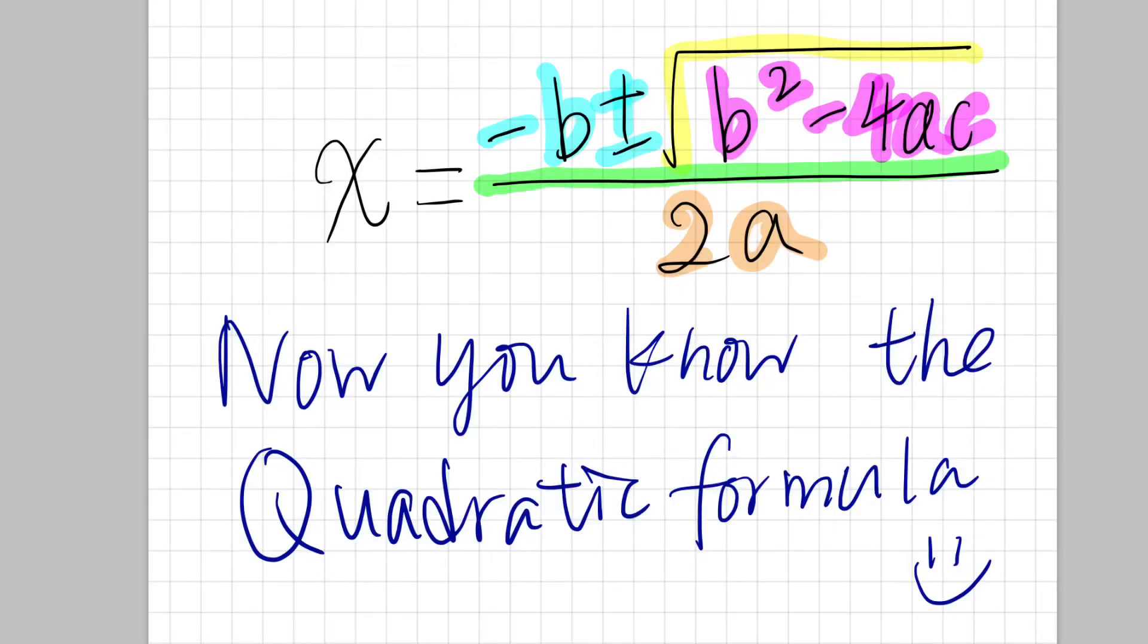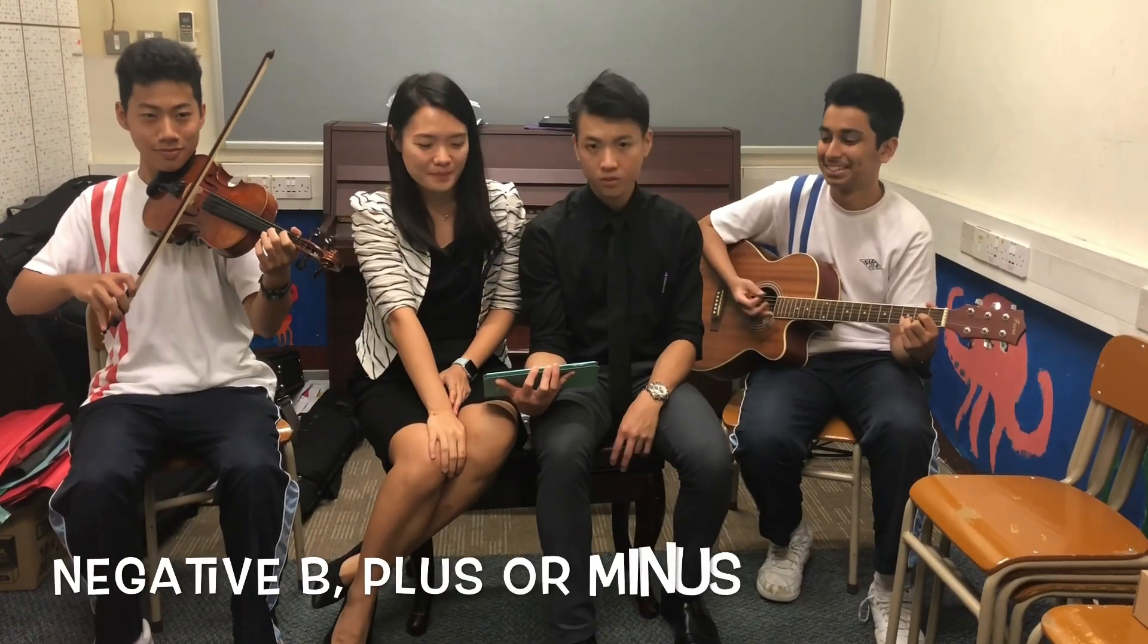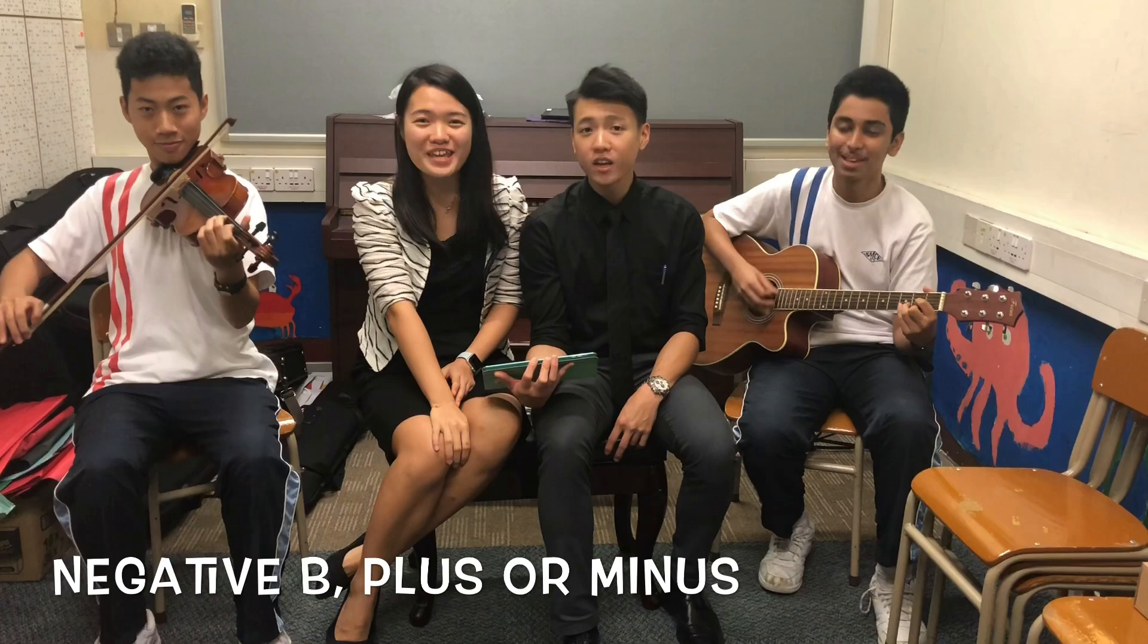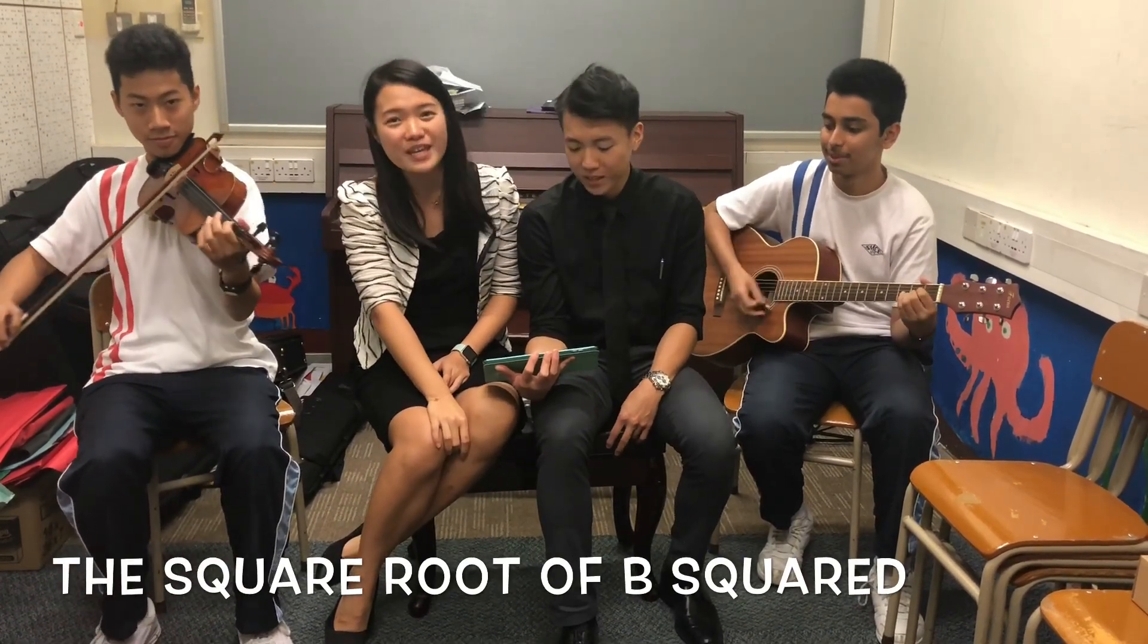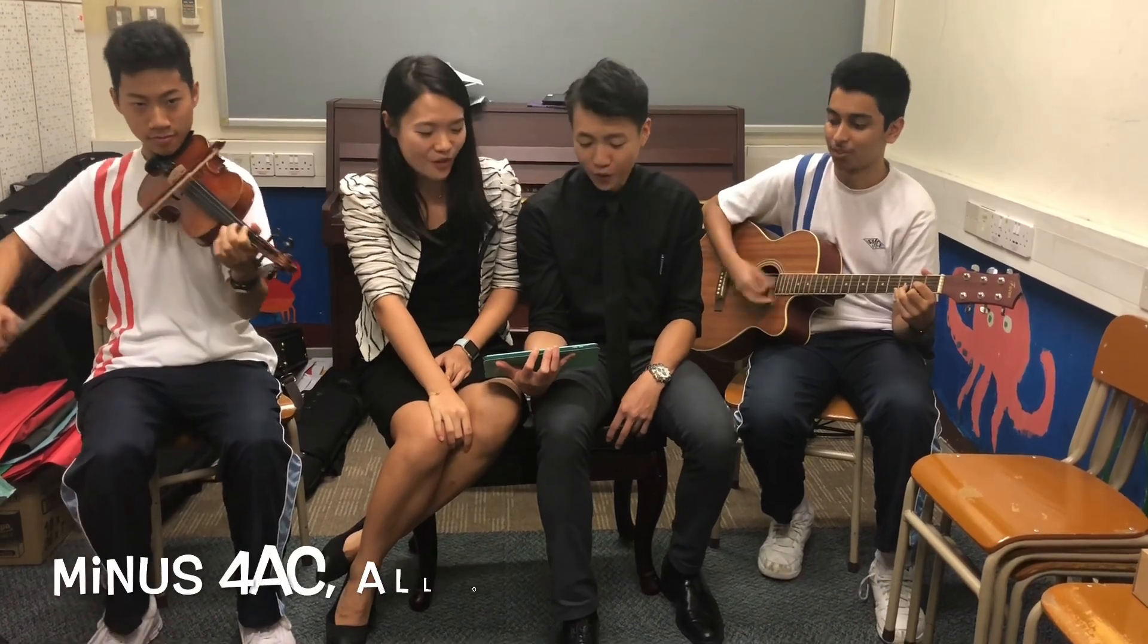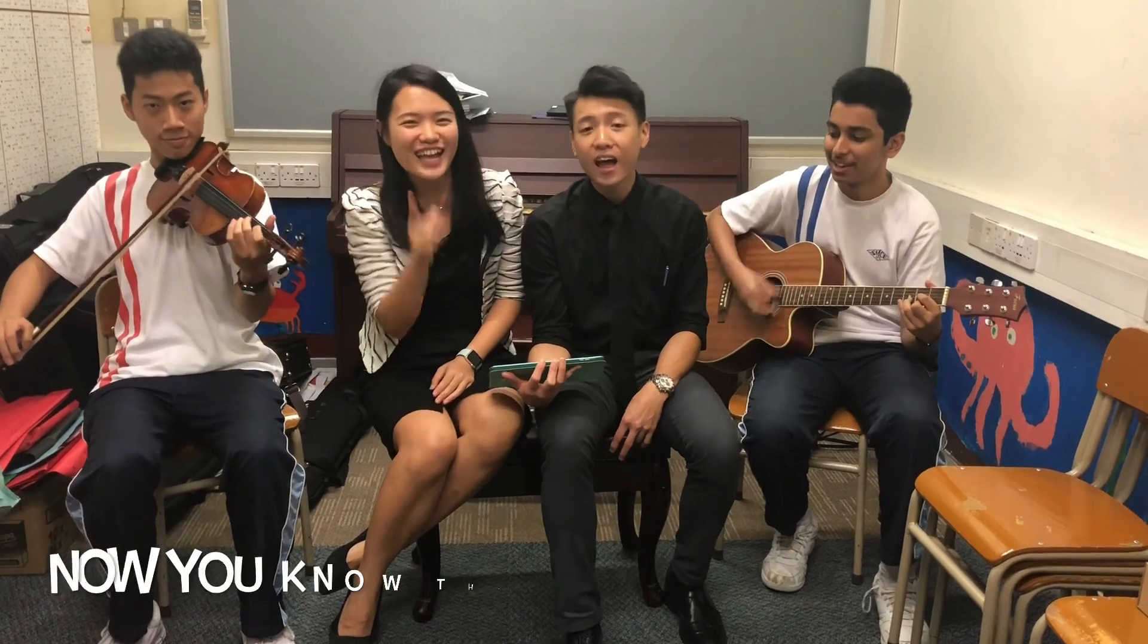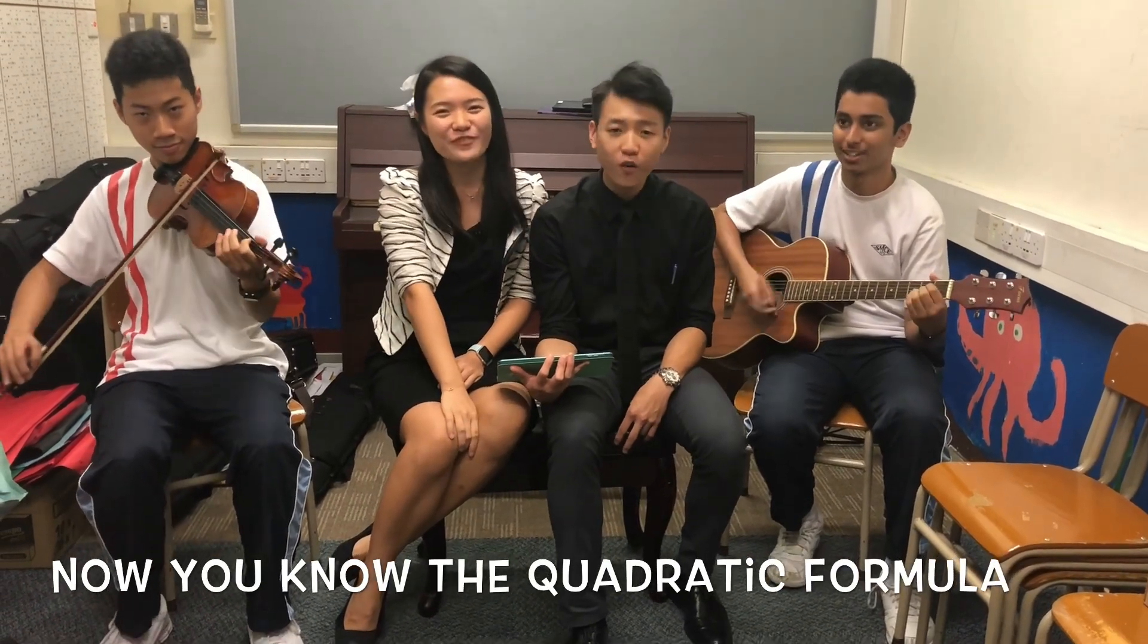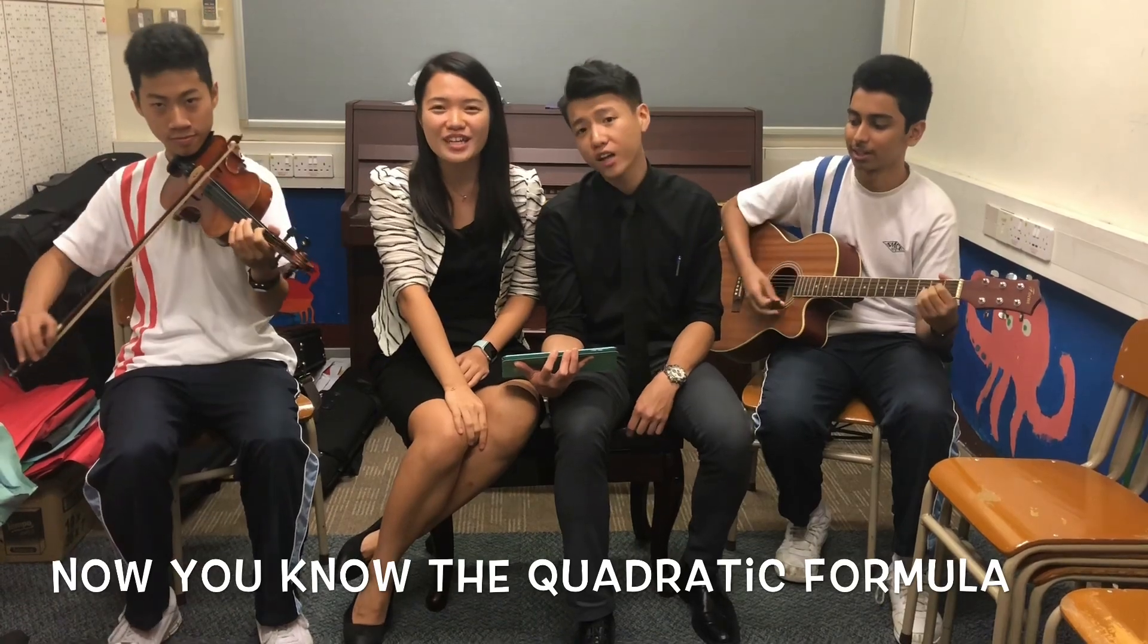Negative b plus or minus the square root of b squared minus 4AC, all over 2a. Now you know the quadratic formula!